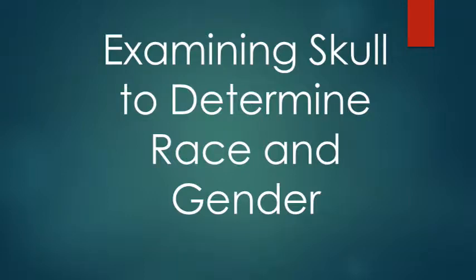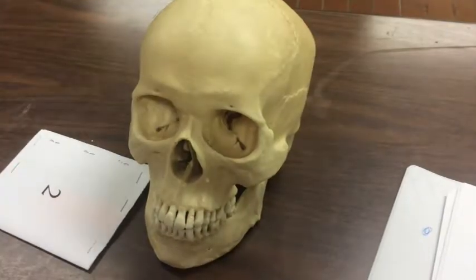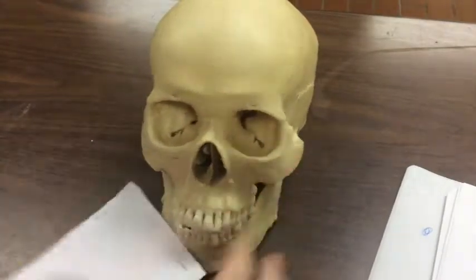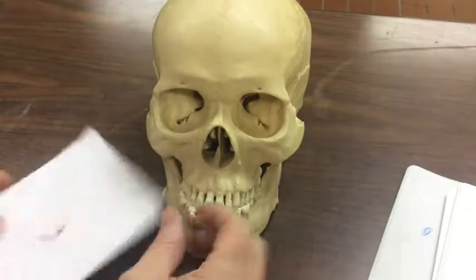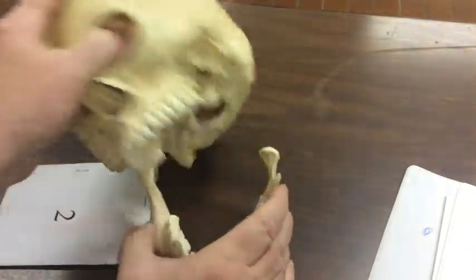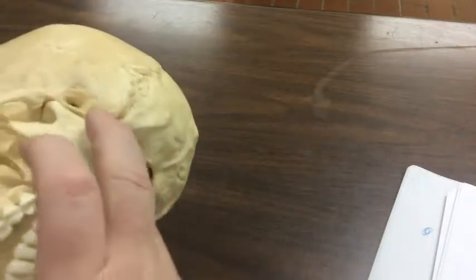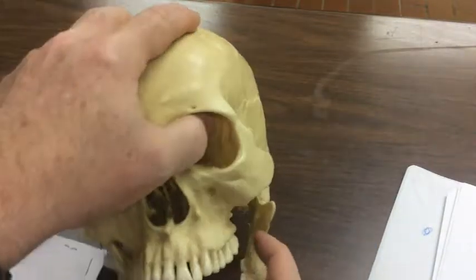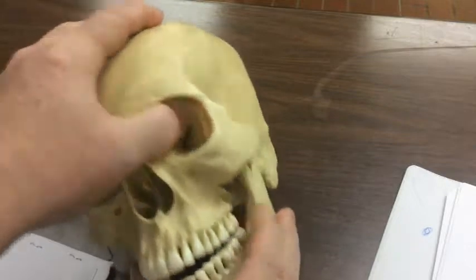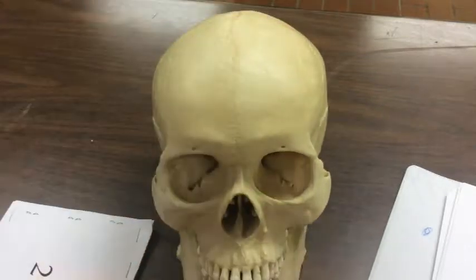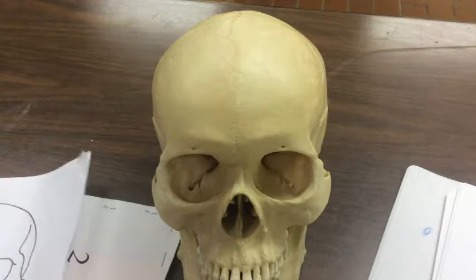We're doing forensic science — examining skulls to determine race and gender. First thing you do when you walk up to the table is identify the skull. In this case it's number two, but it won't always be number two. Keep in mind the jaw and the skull are separate, they are not together. This is plastic, not real bone — just a representation of the skull.